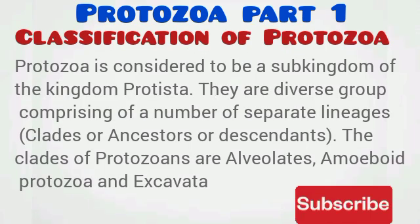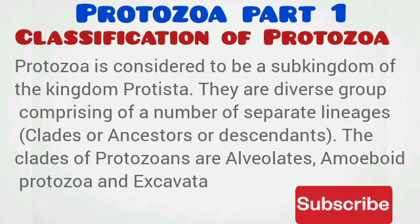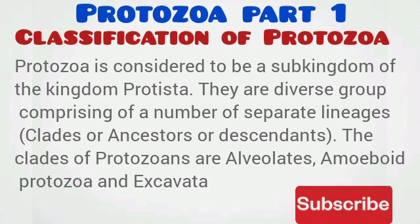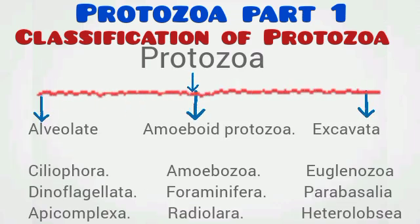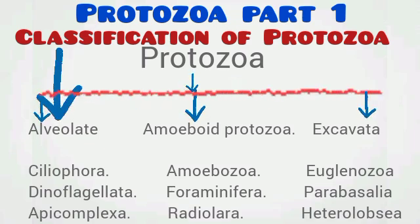Protozoa is considered to be a sub-kingdom of the kingdom Protista. They are a diverse group comprising a number of separate lineages — polyphyletic. They have different ancestors, and each separate lineage is called a clade. A clade is a group that originates from a common ancestor; all descendants, both living and extinct, come from that common ancestor. The clades of protozoa are the Alveolata, the Amoeboid protozoa, and the Excavata.